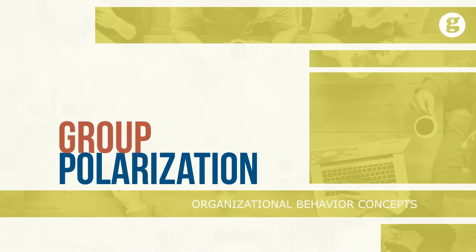People and organizations work in a variety of groups — formal and informal, permanent and temporary, and various kinds of teams. Most of these groups make decisions that affect the welfare of the organization and the people in it. Therefore, we need to consider group decision-making. The primary elements we will discuss are group polarization, groupthink, and group problem-solving methods.